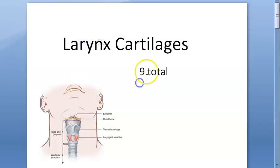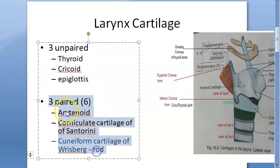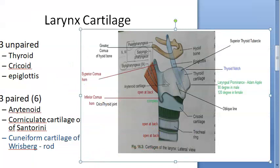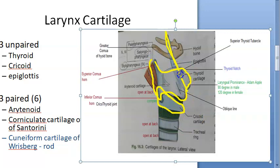In this video let's look at the cartilages of the larynx. Totally there are nine cartilages — three unpaired and three paired. Three paired means six, so six plus three equals nine. The three unpaired cartilages are the thyroid, cricoid, and epiglottis. In this diagram you can see where the thyroid is, then the cricoid, and here you have the epiglottis.